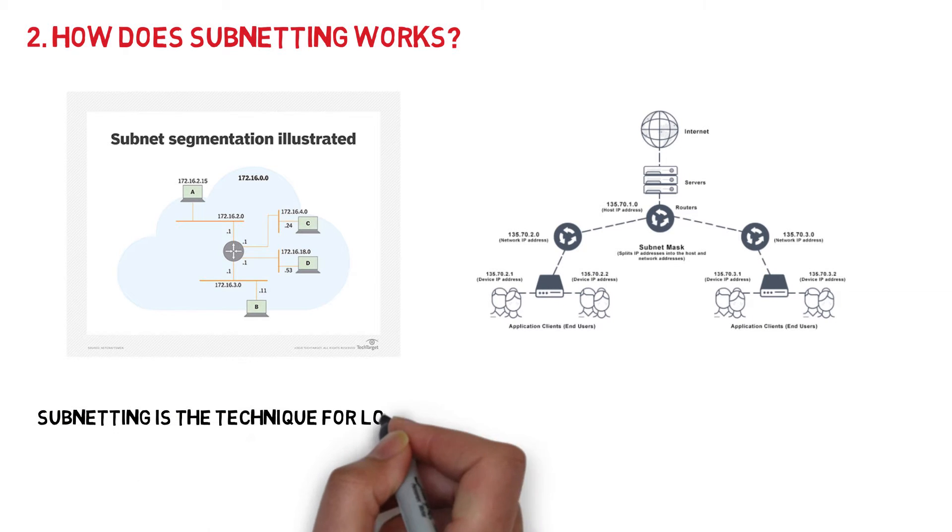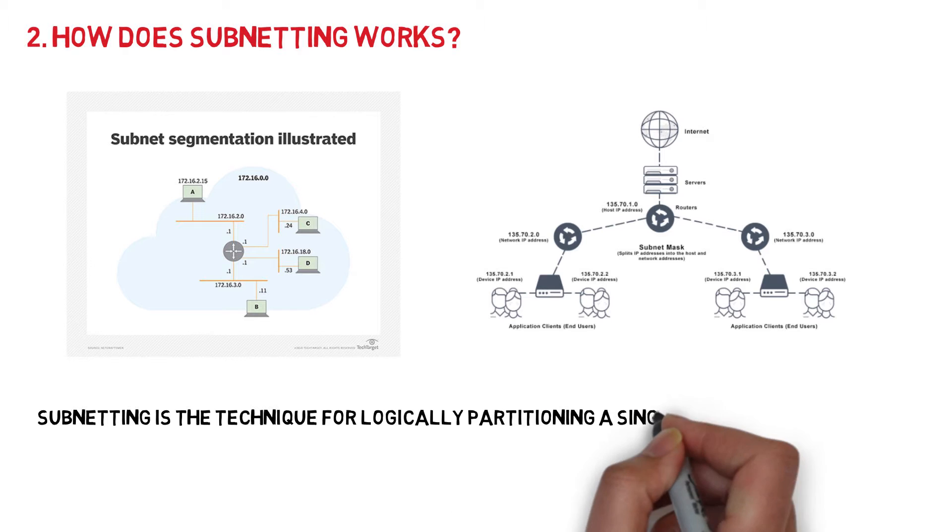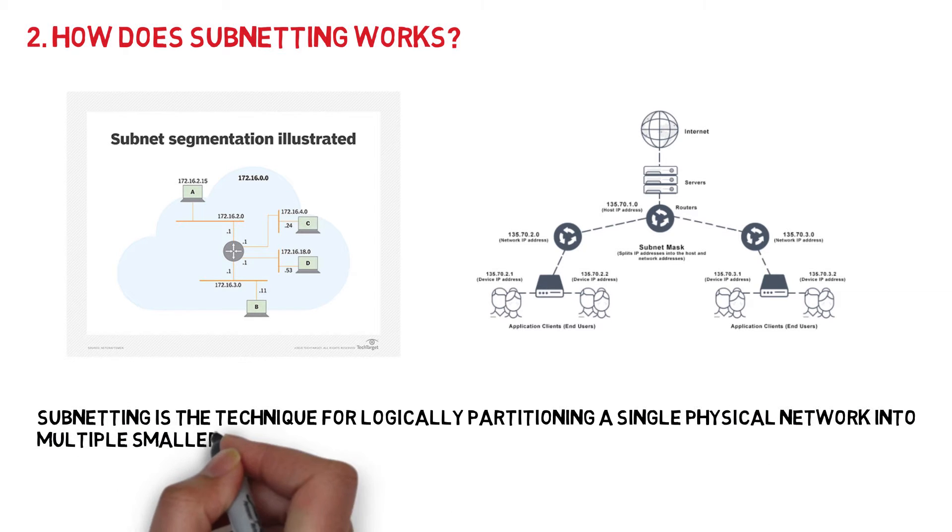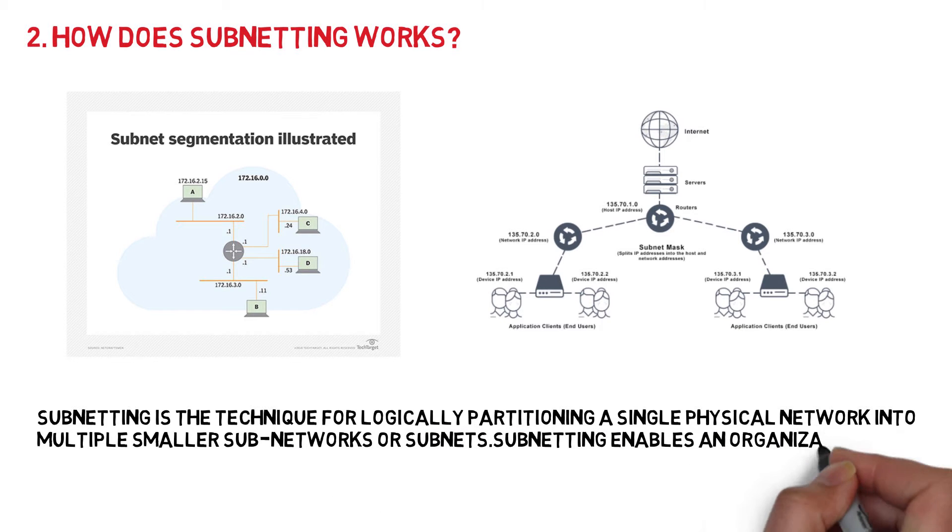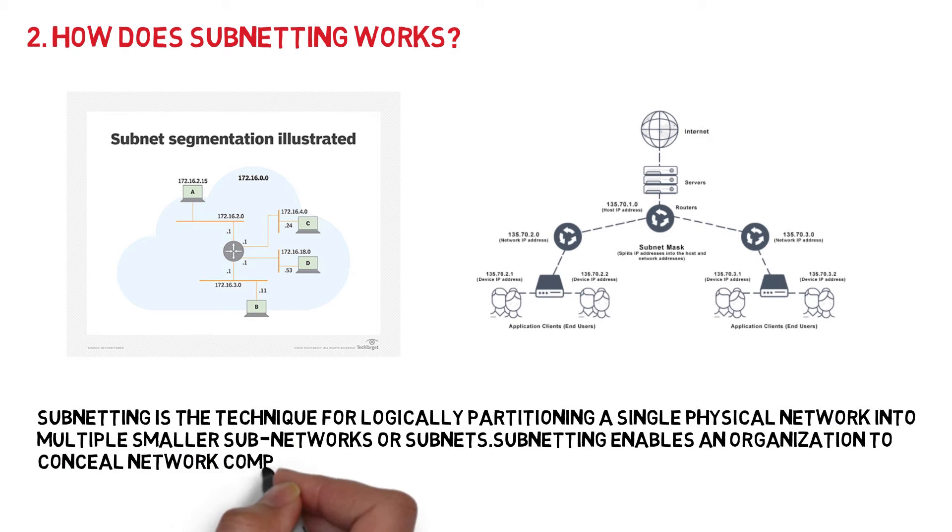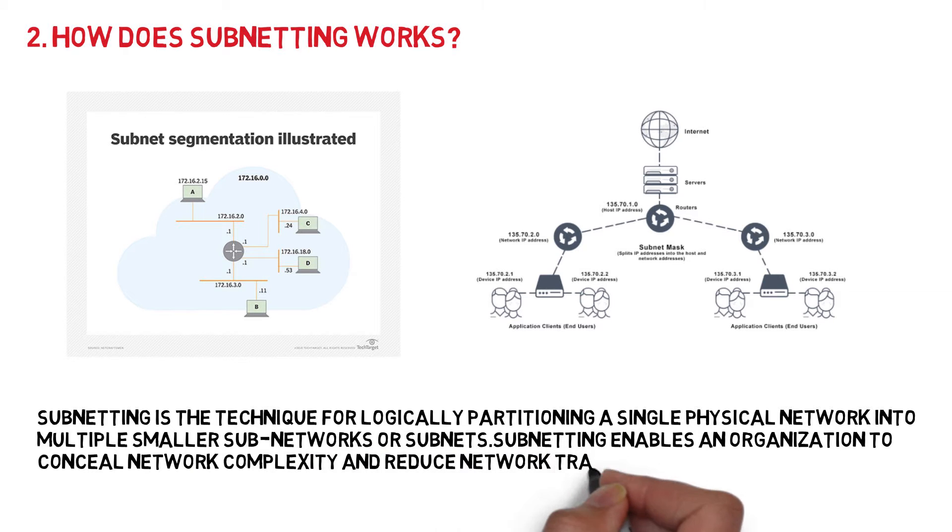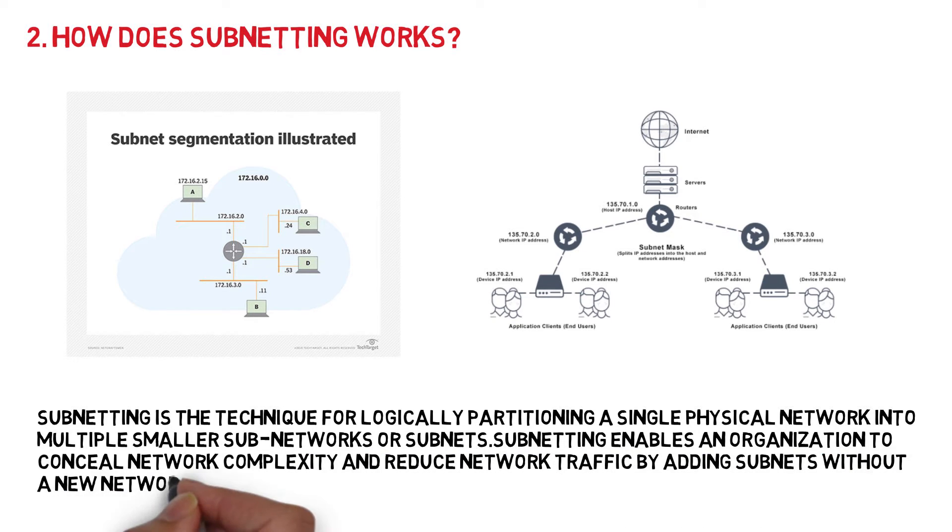How does subnetting work? Subnetting is the technique for logically partitioning a single physical network into multiple smaller subnetworks or subnets. Subnetting enables an organization to conceal network complexity and reduce network traffic by adding subnets without a new network number.